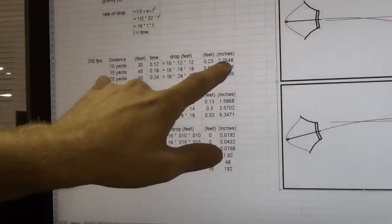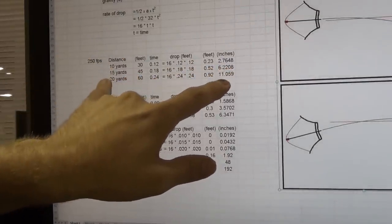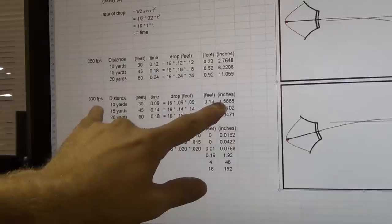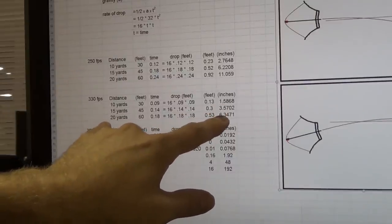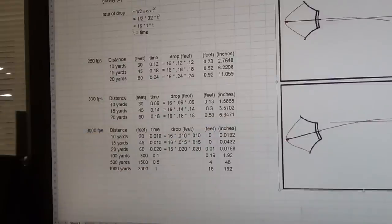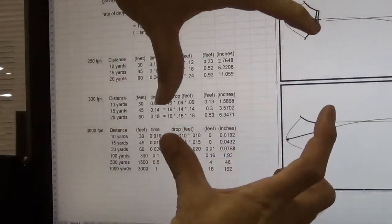Okay, for the 250 feet, we had two and three quarter all the way up to 11 inches. For 330, it gets smaller, but you've got an inch and a half all the way up to six and a half, almost six and a third inches. That's still a big amount of drop, and that's going to be, six inches is that big.